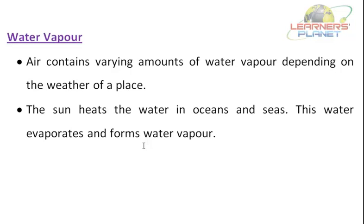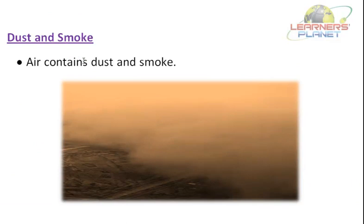Nitrogen, oxygen, carbon dioxide, and water vapour are constituents of air. Other than these, dust and smoke are also present in air. Have you ever seen sun rays entering a dark room and noticed tiny particles in them? Those are dust particles. Smoke released by industries, factories, vehicles, and other sources mixes with the air and enters the atmosphere. These are some ways dust and smoke enter the atmosphere.